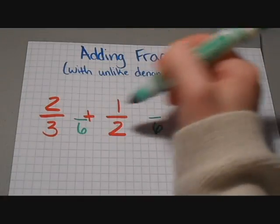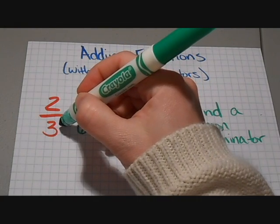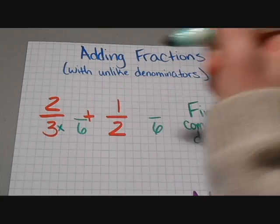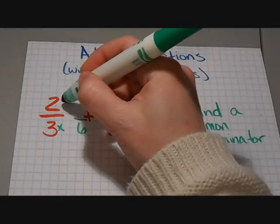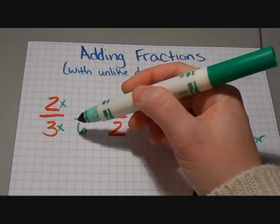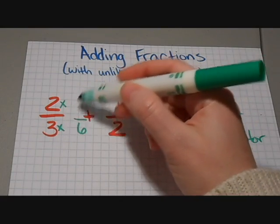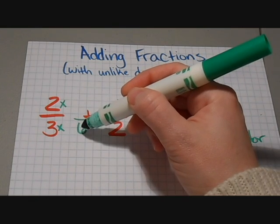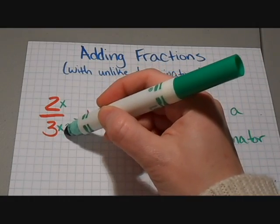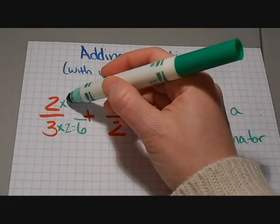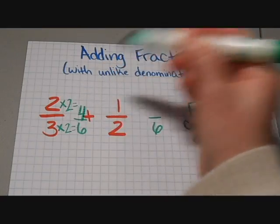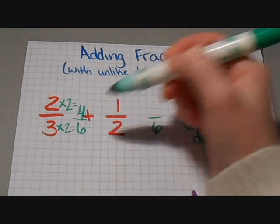Now in order to find this common denominator or to find my equivalent fractions, what I'm going to do is multiply the top and the bottom of each fraction by the same number. And you have to use the same number in order for this fraction to be equivalent. So 3 times what would give me 6? Well, that's going to be 2. So that means I have to multiply the top times 2 as well. So 2 times 2 is 4. So this is my new fraction, 4/6.